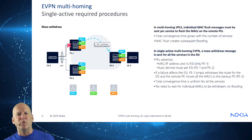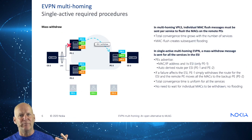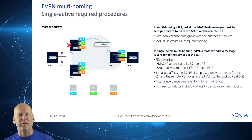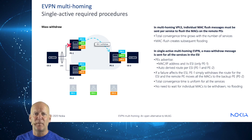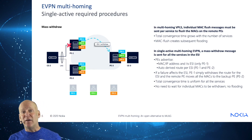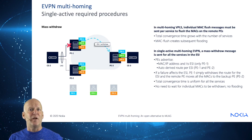There are also required procedures for single-homed deployments. Back when we had VPLS — our previous L2 technology of choice — we learned some lessons that helped us increase scalability. In multi-homing VPLS, individual MAC flush messages had to be sent per-service to flush MACs on the remote PEs. The total convergence time would grow with the number of services, and the MAC flush would create subsequent flooding as MAC address learning had to occur. In single active multi-homing EVPN, a mass withdrawal message is sent for all services in the ESI. Total convergence time is uniform for all services, and there's no need to wait for individual MACs to be withdrawn — and there's no flooding.